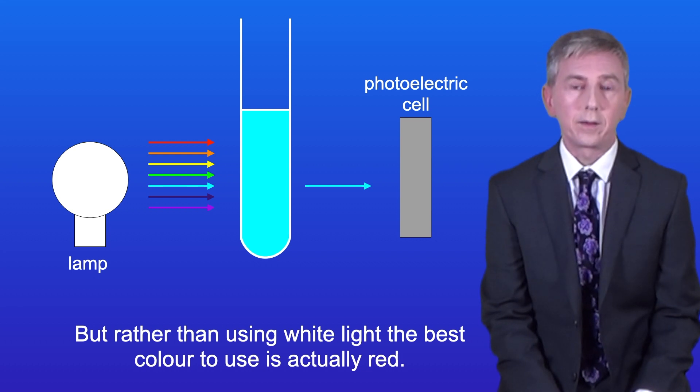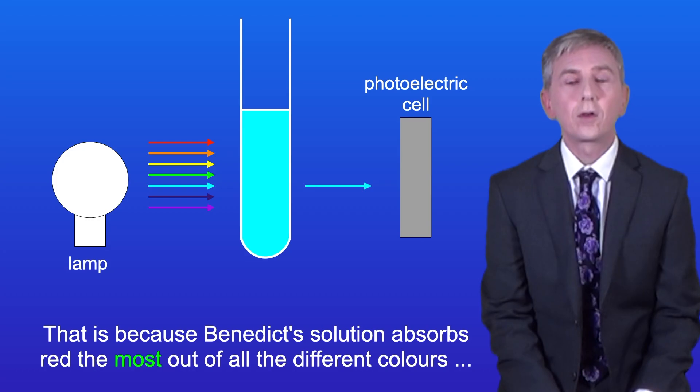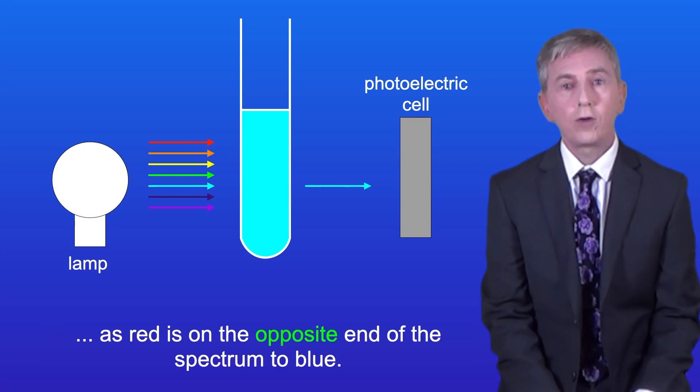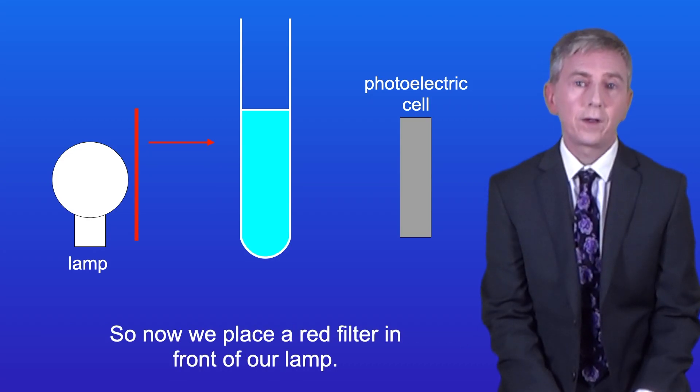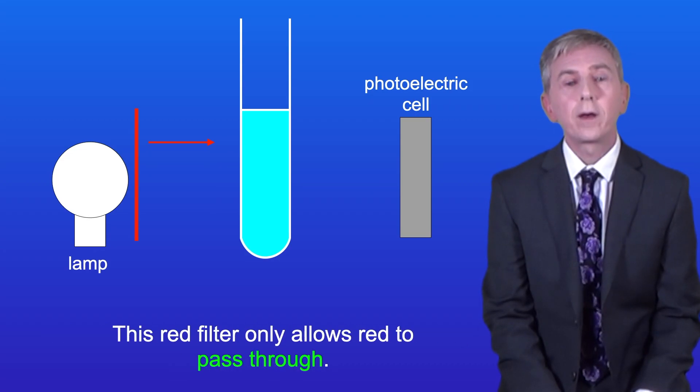Now this absorption of light can be used to quantify the level of blueness. But rather than using white light, the best color to use is actually red. That's because Benedict's solution absorbs red the most out of all the different colors, as red is on the opposite end of the spectrum to blue. Scientists say that red is the complementary color to blue. So now we place a red filter in front of our lamp, and this red filter only allows red to pass through.